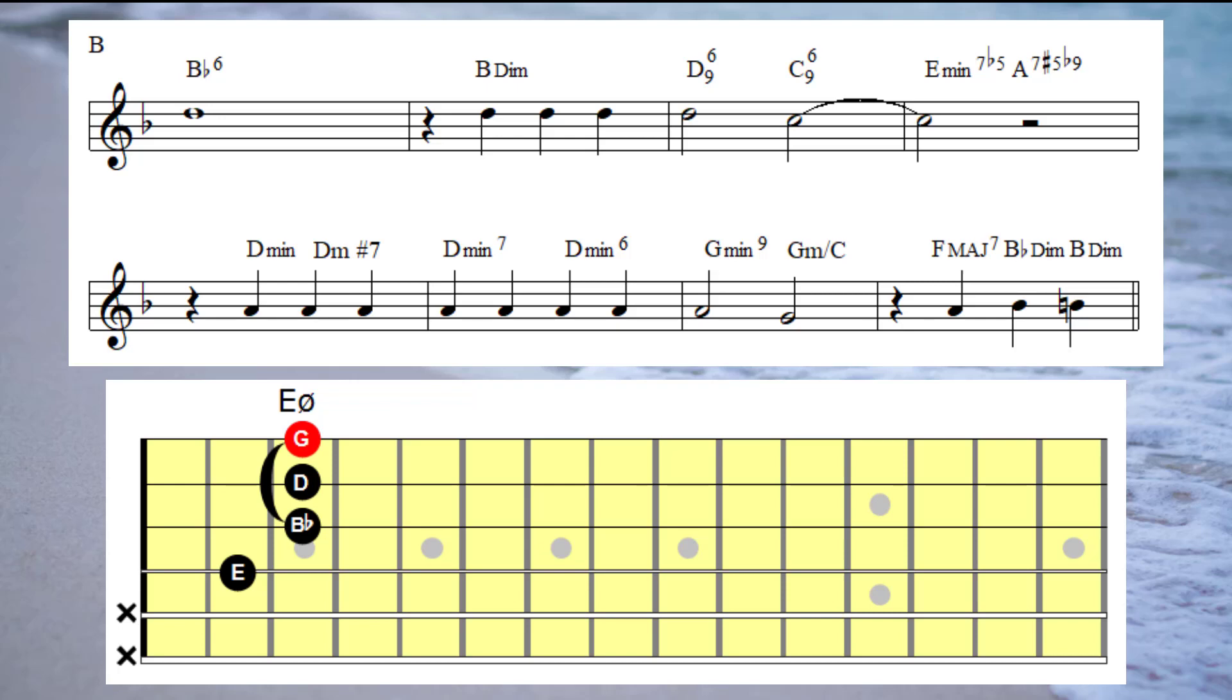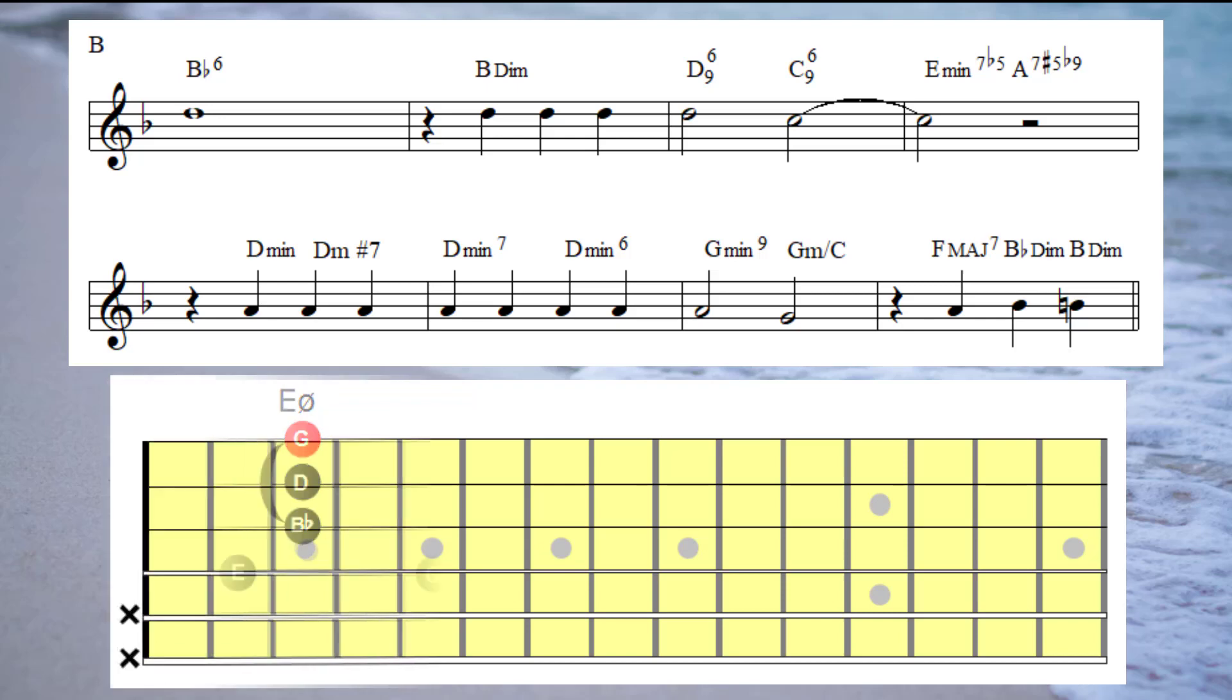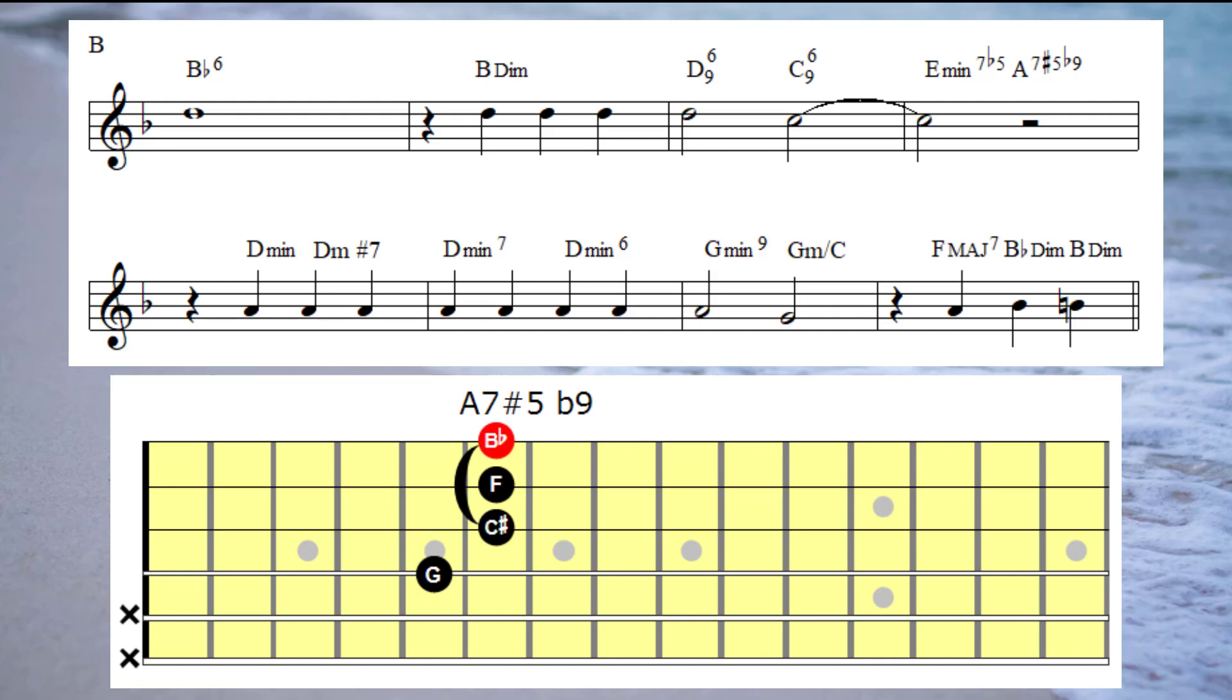The chord that we're producing when we do that, when we move that same shape up three frets, produces an A seven sharp five flat nine chord.